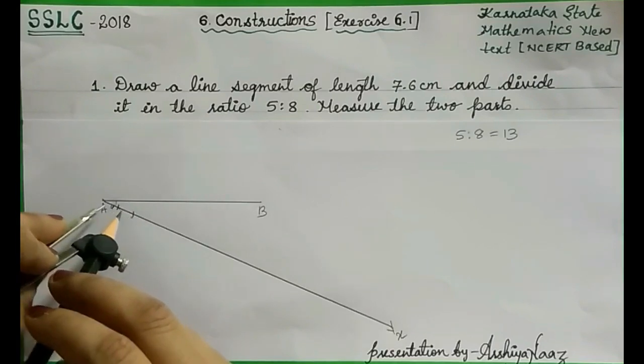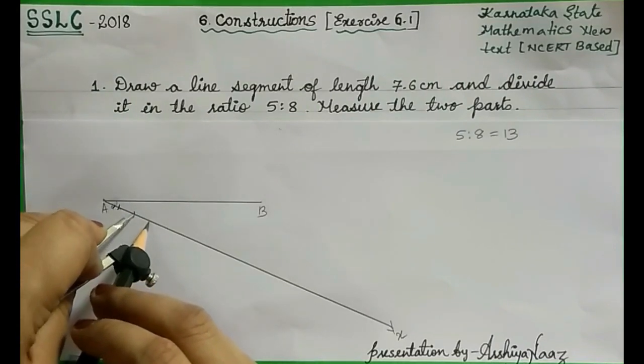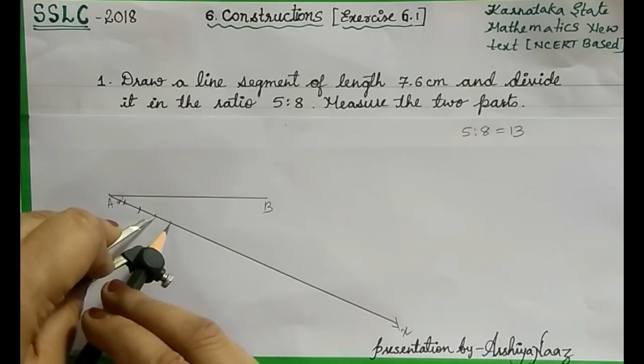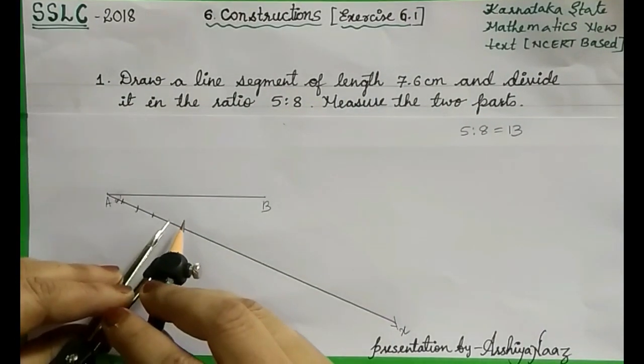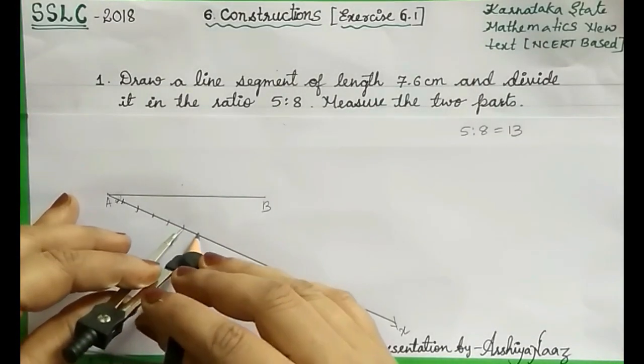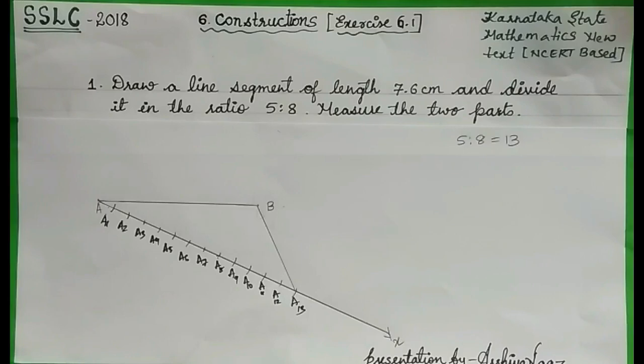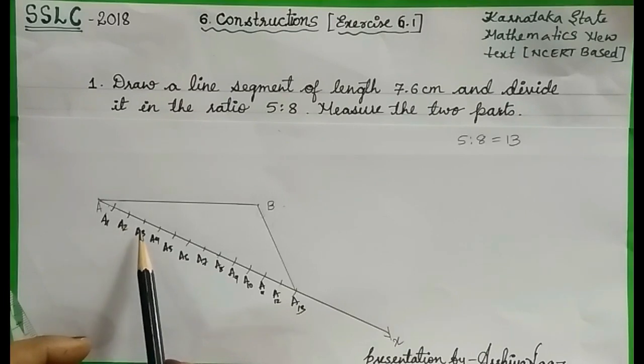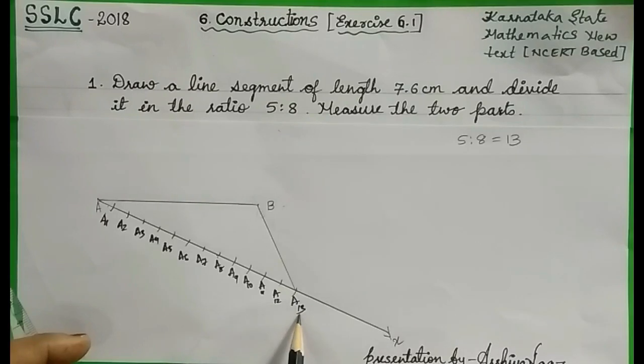1, 2, 3, 4... similarly mark 13 points. Name these equidistant points as A1, A2, A3, A4, A5, similarly till A13.